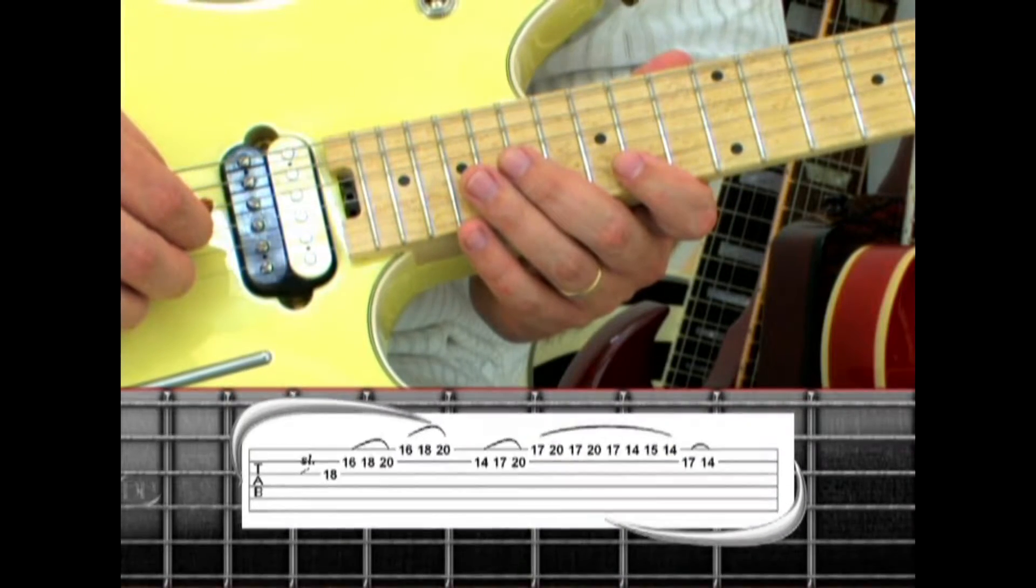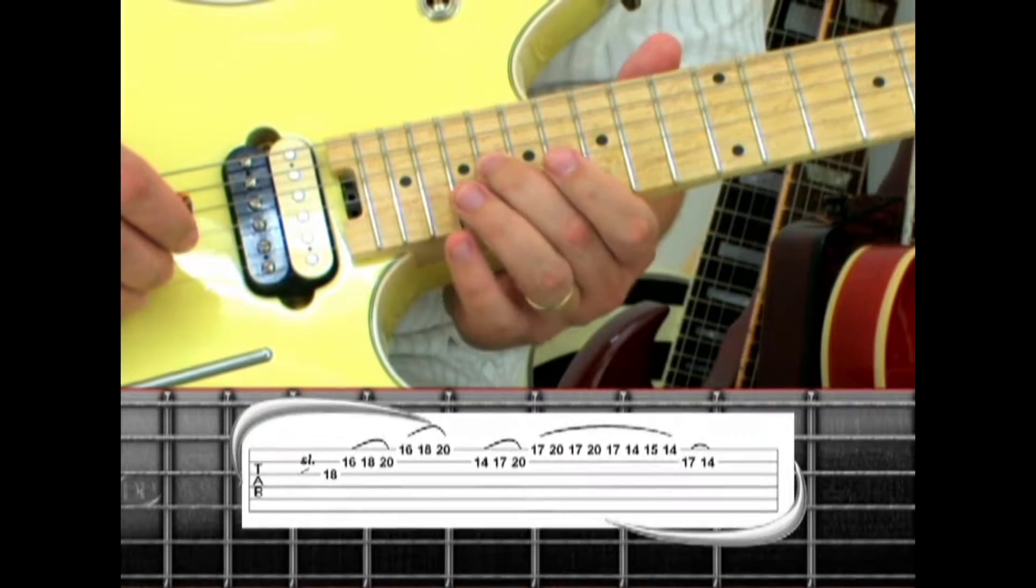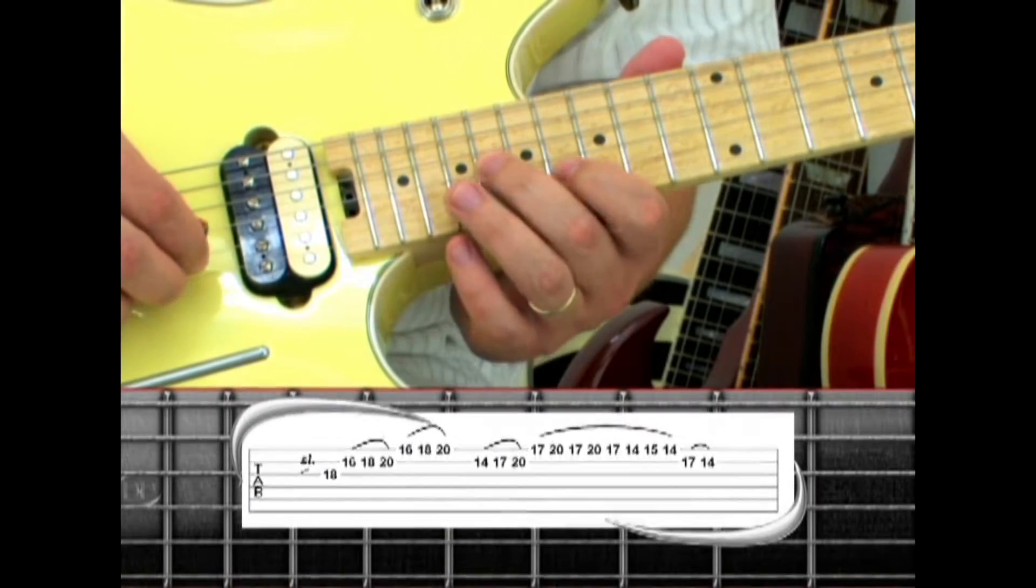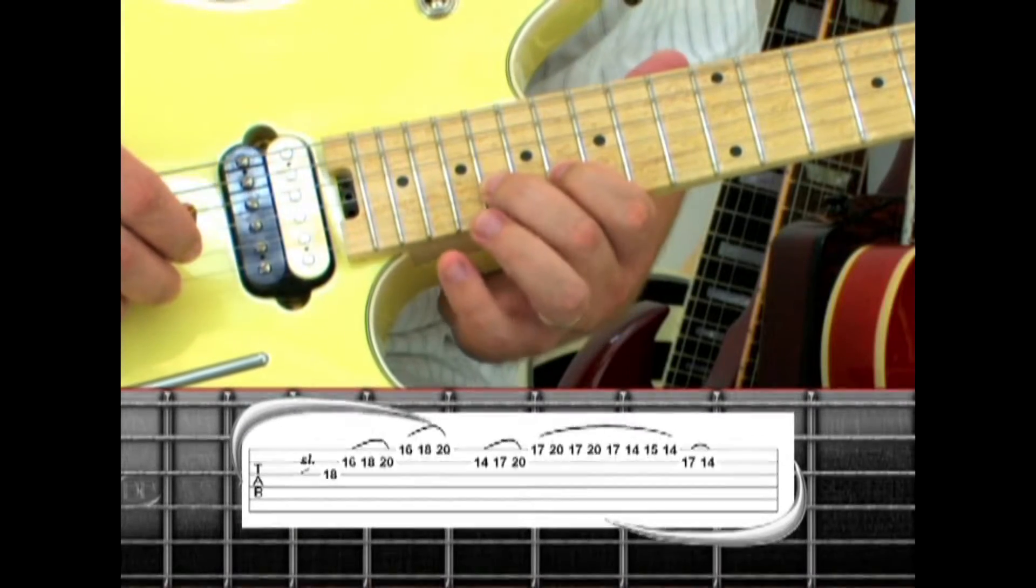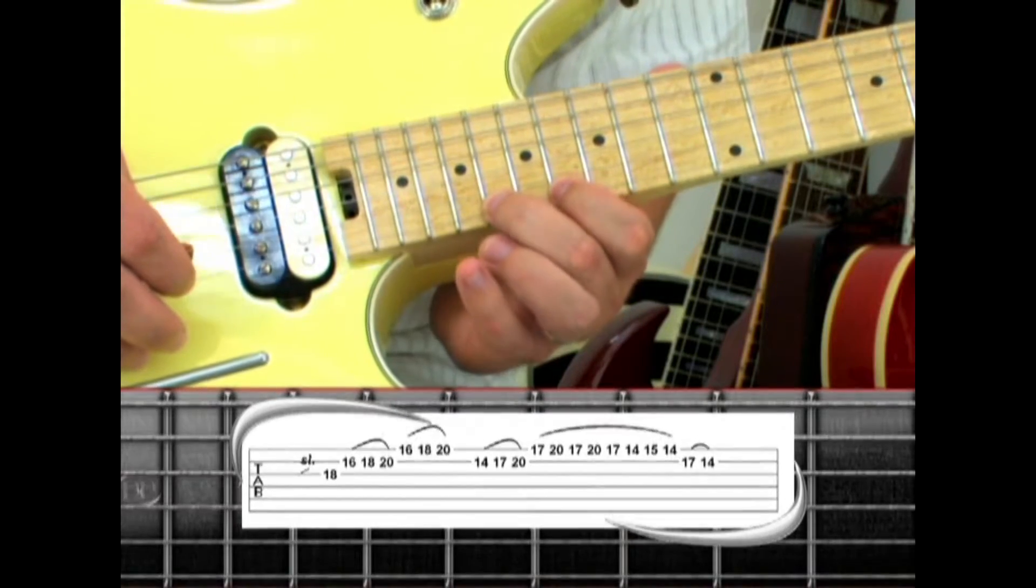Slide the middle finger up the third string to the 18th fret to start off phrase 8. Place the index finger on the second string 16, hammer to 18, to 20. The same on the first string 16, hammer to 18, hammer to 20.